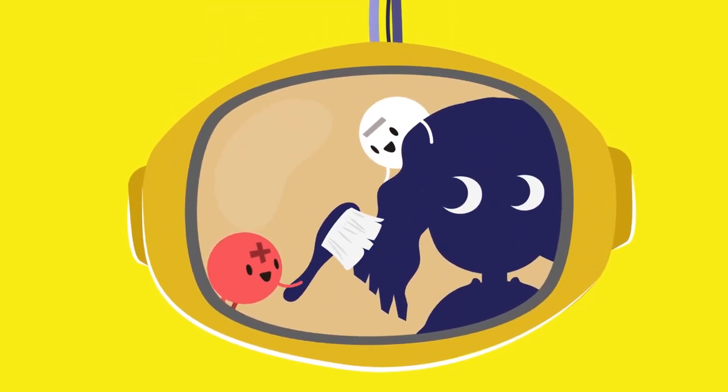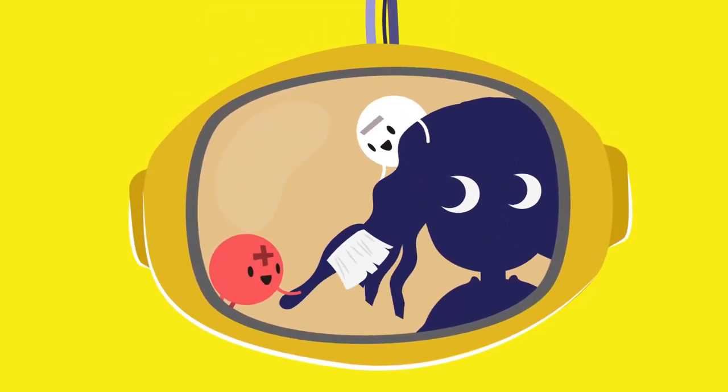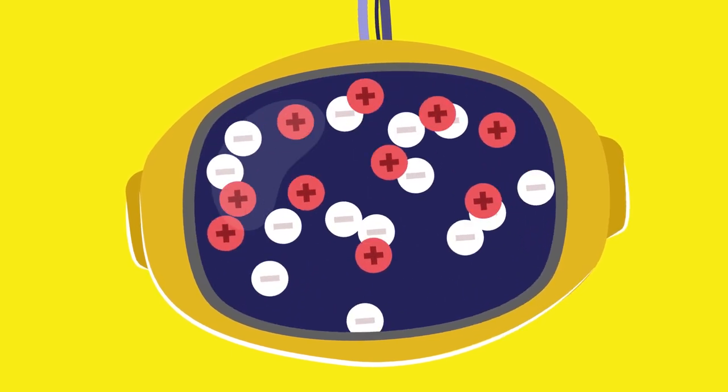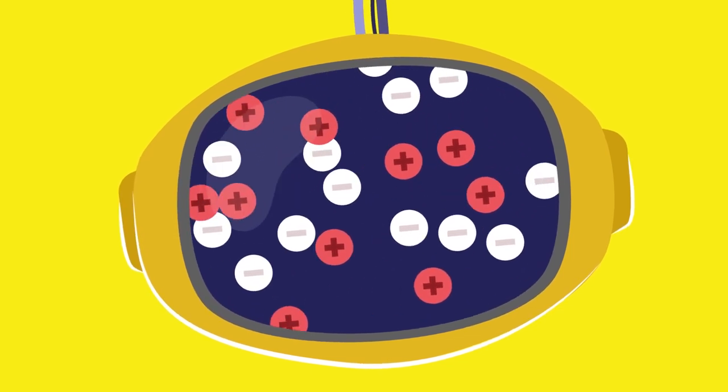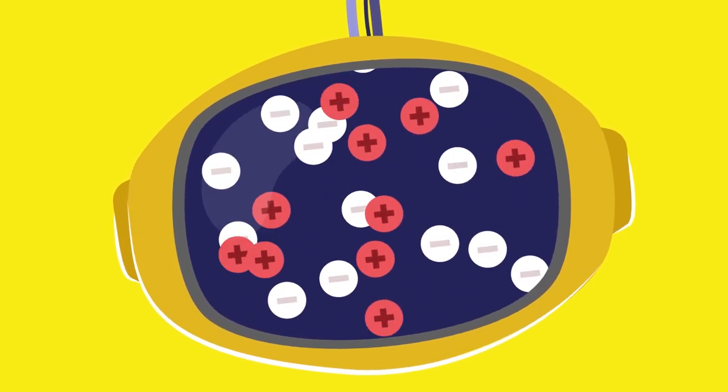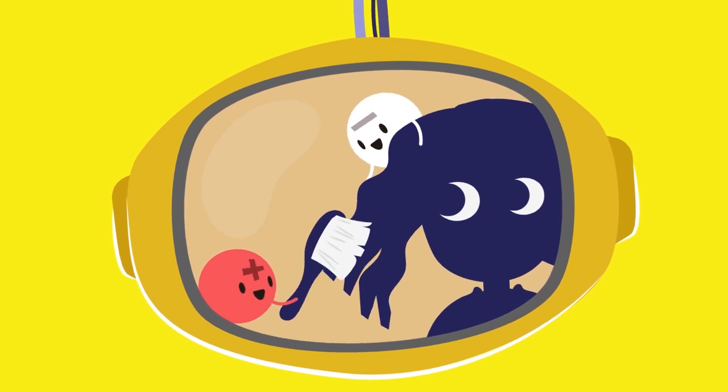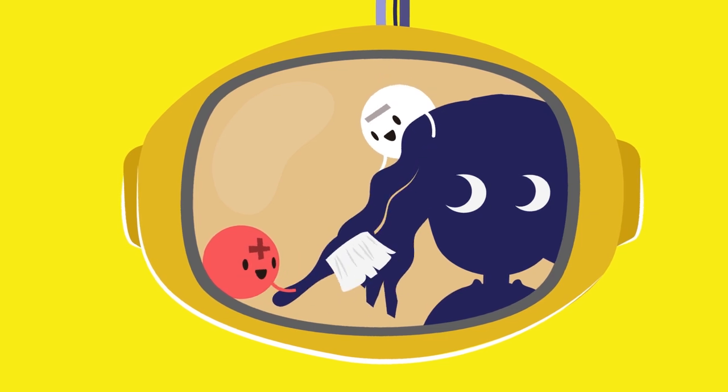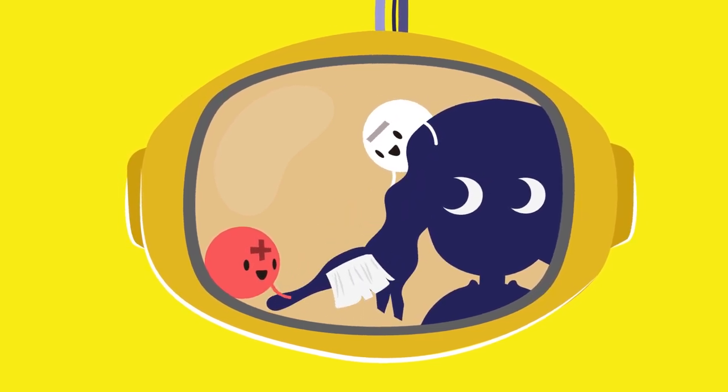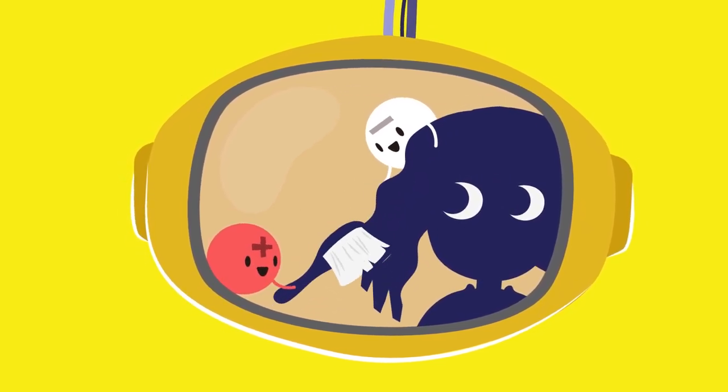When two objects rub against each other, they become charged with energy and the positive and negative charges move, creating an imbalance. We call this imbalance static electricity. Sometimes static electricity causes two objects to stick together or attract to each other, such as hair and a brush when we comb our hair.